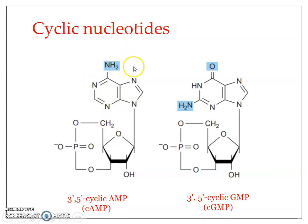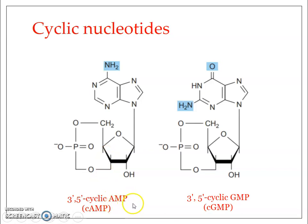Cyclic nucleotides are generally formed of one molecule of purine — either adenine or guanine — one ribose sugar, and one molecule of inorganic phosphate. Since there is only one phosphate along with the base and ribose sugar, it is a nucleotide in cyclized form. With adenine it is called cyclic adenosine monophosphate, and with guanine it is called cyclic guanosine monophosphate.